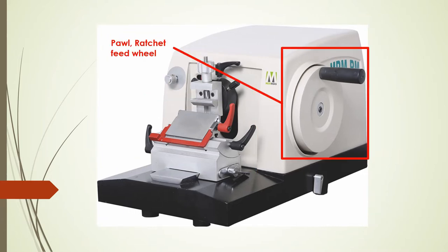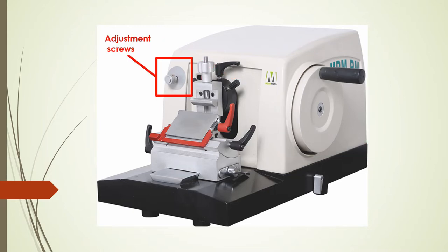Next, we have the pawl and ratchet feed wheel, which are used to adjust the tissue block holder back and forth — they can be adjusted counterclockwise or clockwise. And lastly, we have the adjustment screws, which adjust the thickness or how thin you want your sections to be — anywhere between 3, 5, 10, 15, or 20 microns.